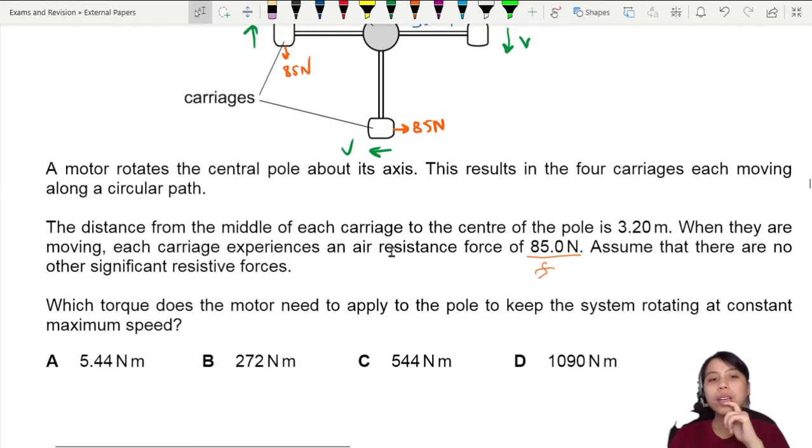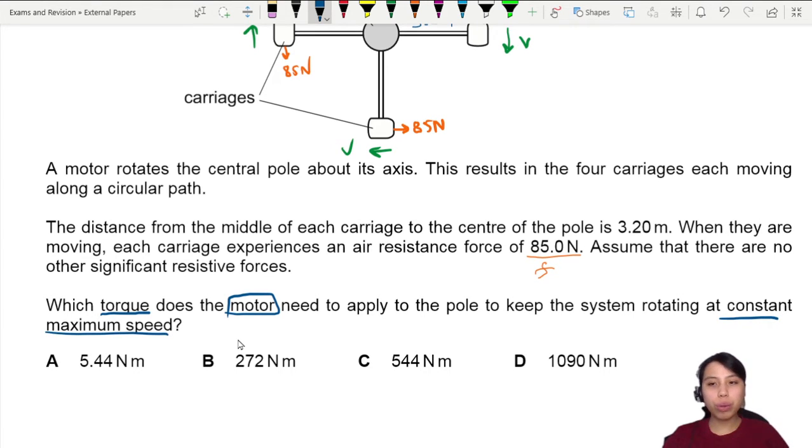Which torque does the motor need to apply to the pole to keep the system rotating at a constant maximum speed? Wow, this one is like rotational dynamics already. Okay, we stay calm first and we say okay, what we're trying to find: torque. By who? By the motor. In order to rotate at constant maximum speed. So that means the net torque should be zero. Constant maximum speed.